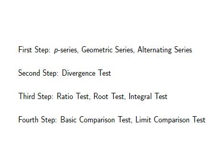Let us look at a quick summary of the four steps. The steps are based on both the difficulty of the test itself and the difficulty of recognizing when the test is useful. P-series, geometric series, and alternating series are the easiest to recognize, and once we have recognized them as such, it is not hard to check whether or not they converge. The divergence test can always be applied and is often a quick first pass to see if the series has actually the potential to converge at all.